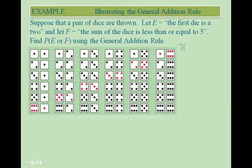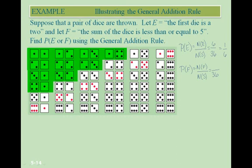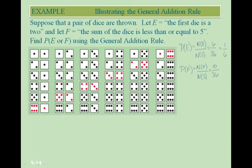Calculating each probability: P(E) = 6/36, since there are 6 outcomes where the first die is a 2 out of 36 total outcomes, which reduces to 1/6. P(F) = 10/36, since there are 10 outcomes where the sum is less than or equal to 5, which reduces to 5/18.